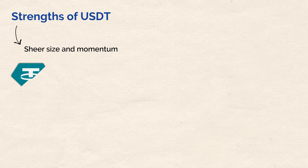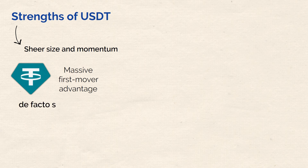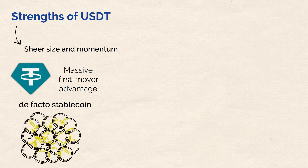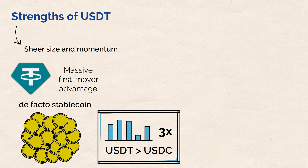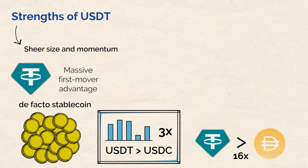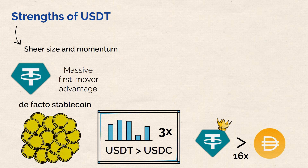Let's talk about some of USDT's strengths. The first and biggest is its sheer size and momentum. USDT has a massive first-mover advantage and is the de facto stablecoin for the vast majority of the crypto space. Around the time of this video, USDT's market cap was more than three times as big as USDC's, the second biggest stablecoin, and almost 16 times as big as DAI, the third biggest stablecoin.